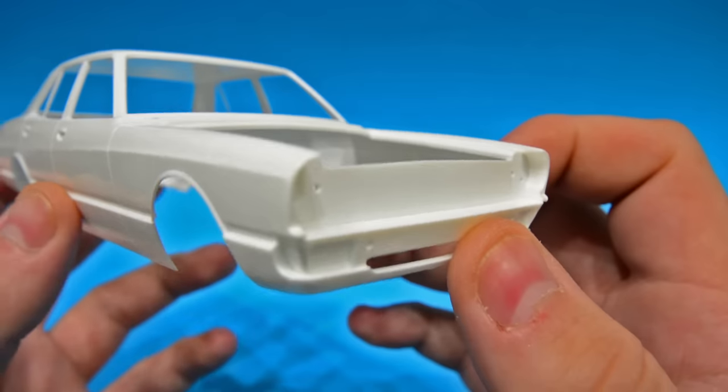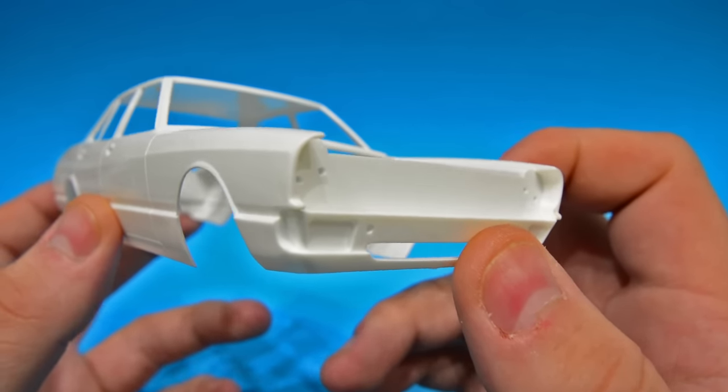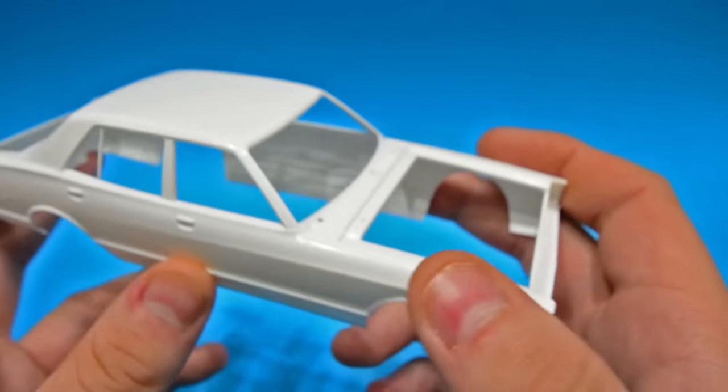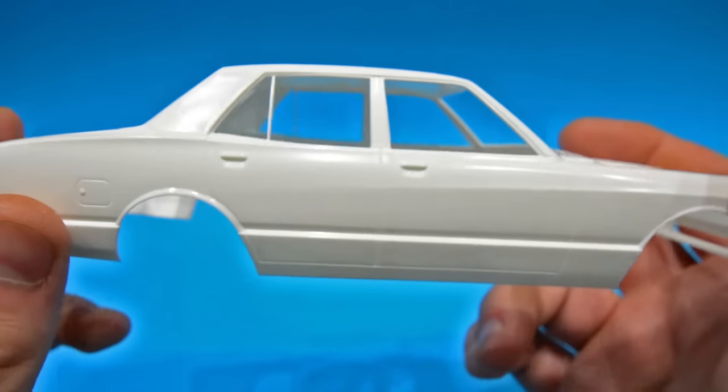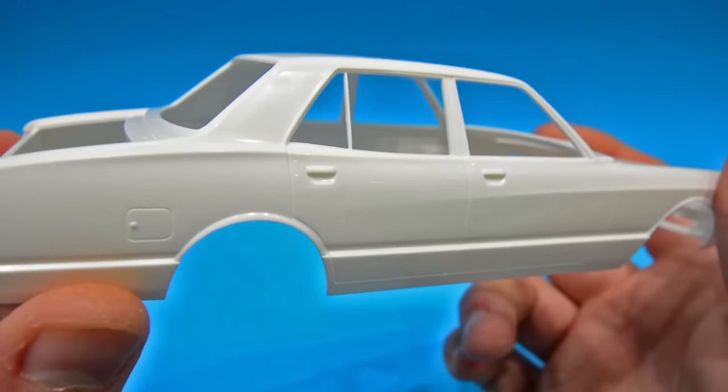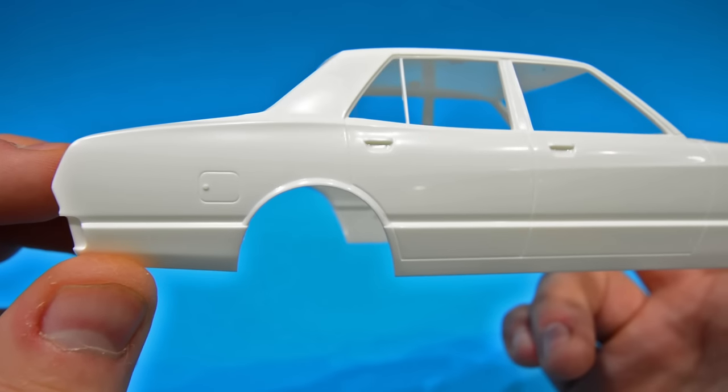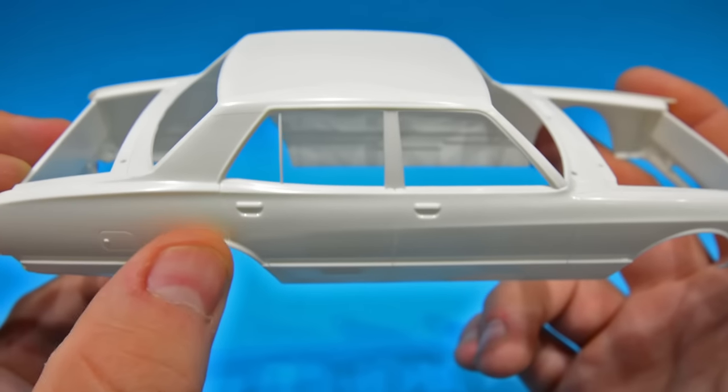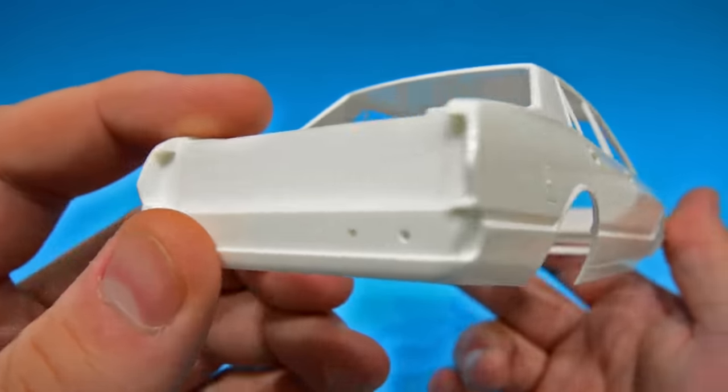Now everything is molded in however the bonnet and the boot are separate. This I think is going to be one of FUJIMI's best kits to be honest with you. Nice mold lines, nicely proportioned as well. I'm loving the little extended arches there. I'm sure it's like standing on the car but I just think that's a nice little touch.